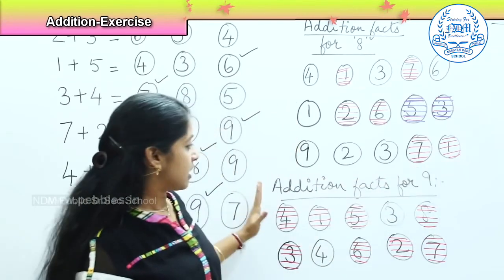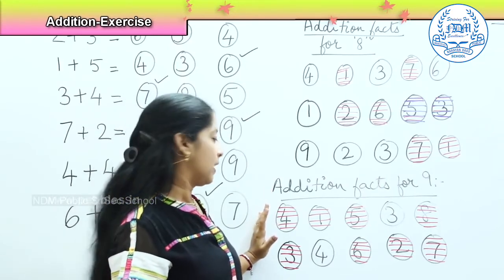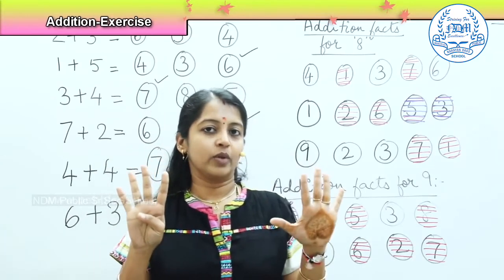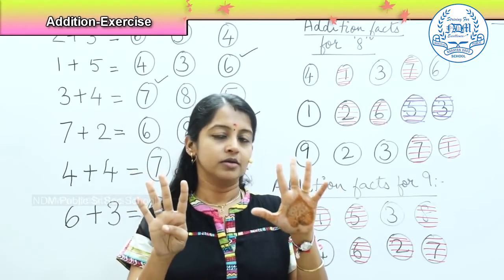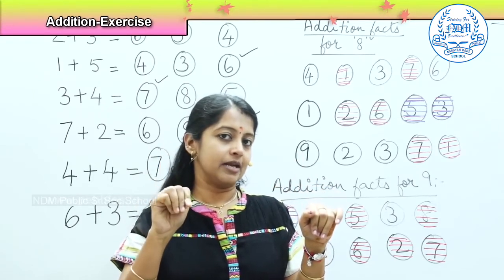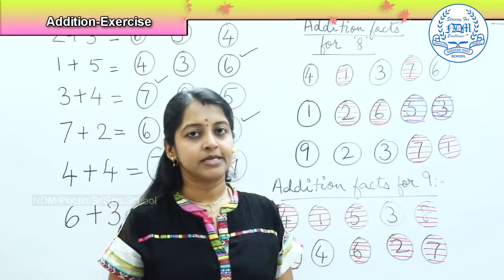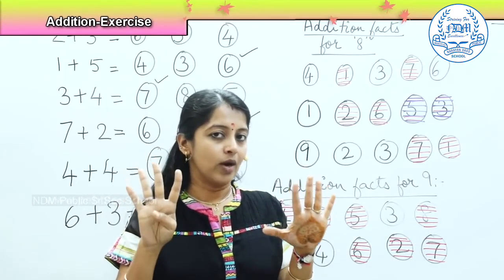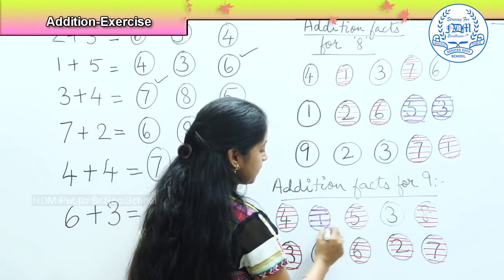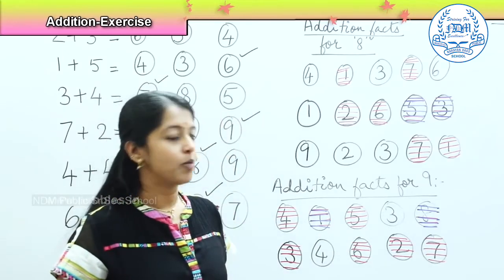Shall we do it for number 9 and check if the answers we selected are correct? I selected 4 and 5 — I keep 4 in one hand and 5 in the other. The total I get: 1, 2, 3, 4, 5, 6, 7, 8, 9 — yes, it is matching. The next possibility is 1 and 8. I keep 8 fingers and when I add 1 more, it becomes 9. So the second possibility is 1 and 8 — yes, the option is correct.